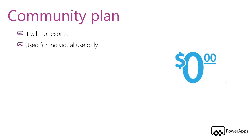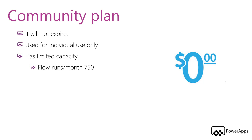In the community plan, you cannot share apps, flows, connections, or any other features with other users of your tenant. You also cannot add any other users as an environment admin or maker, and you cannot add any user to the database role from the admin center. You should be aware that the community plan has limited capacity as it is for individual use only, not for a team. You will have 750 flow runs per month, 200 MB of database size, and 2 GB of file storage. If you hit the capacity limits, you can purchase one of the PowerApps plans.